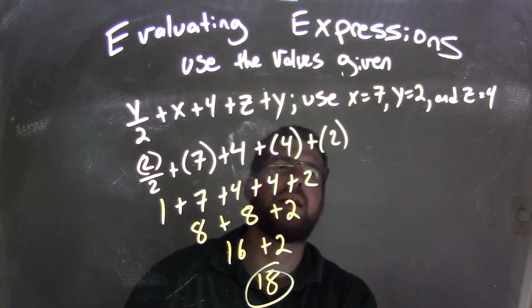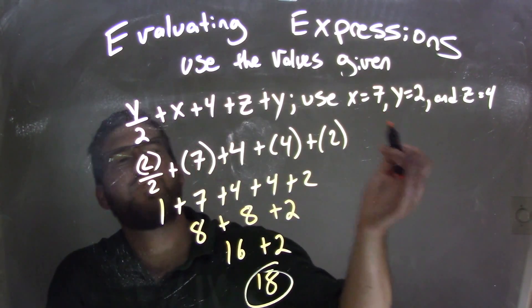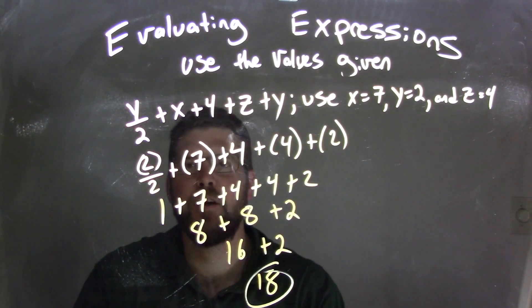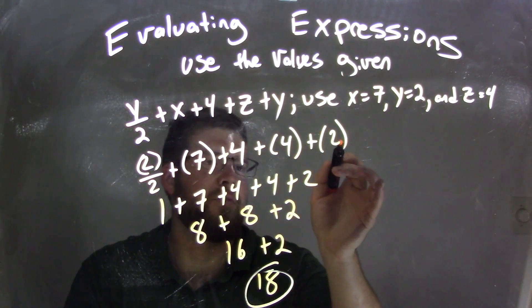And there's our final answer. So again, let's recap. We're given x equals 7, y equals 2, and z equals 4. Let's plug those back into our corresponding variables: x was 7, y was 2, z was 4, and y was 2 again.